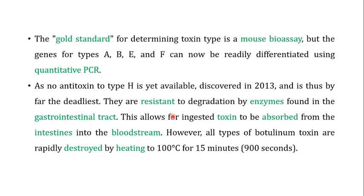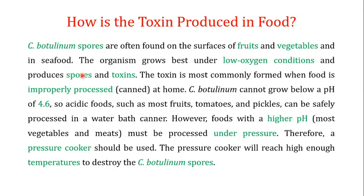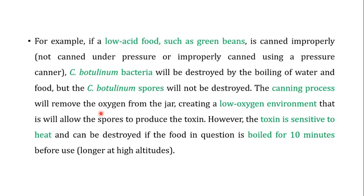The gold standard for determining the toxin type is a mouse bioassay and quantitative PCR. Clostridium botulinum favors foods with a higher pH, like vegetables and meats, because it cannot grow below a pH of 4.6. So acidic food is not a favorable environment for toxin production.